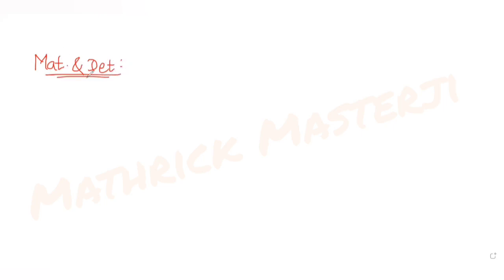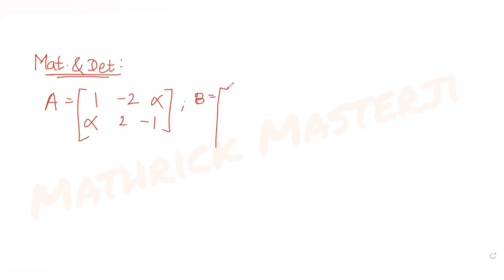Hi guys, I hope you are all doing well. Today's question is from the topic of matrices and determinants. The question tells us: let A equal the matrix [1, -2α; α, 2, -1] and the matrix B is given as [2α, -1; 2, 4, -5]. We are also told that α belongs to ℂ, that is, the complex numbers.